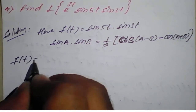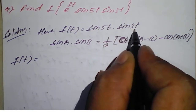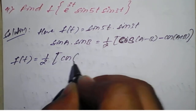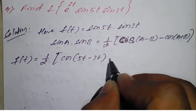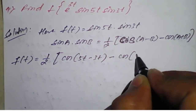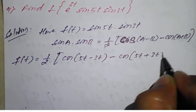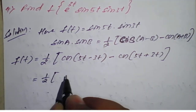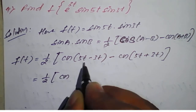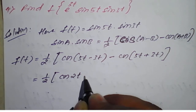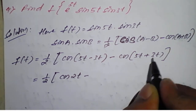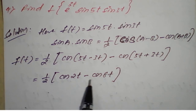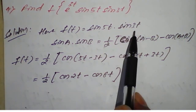Applying the formula with a = 5t and b = 3t, f(t) becomes one-half times cos(5t minus 3t) minus cos(5t plus 3t), which simplifies to one-half times cos(2t) minus cos(8t). This is the simplified form of sine 5t into sine 3t.